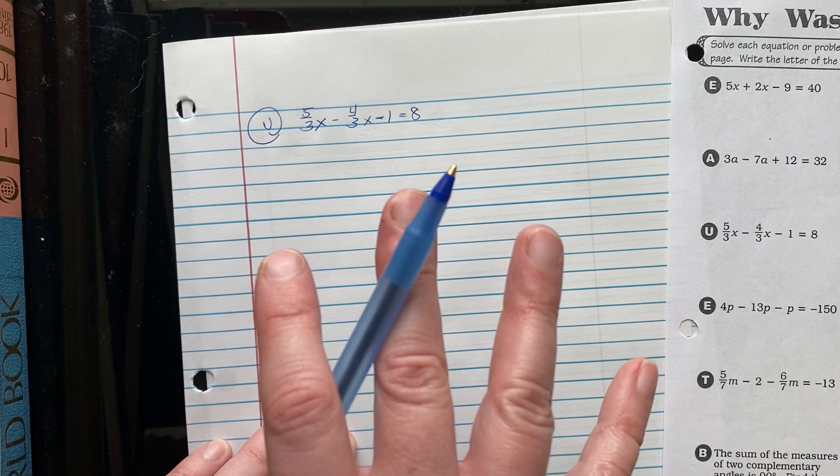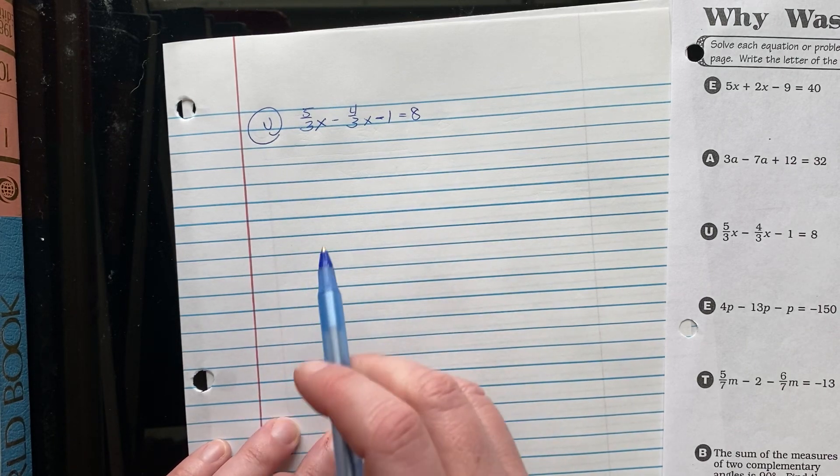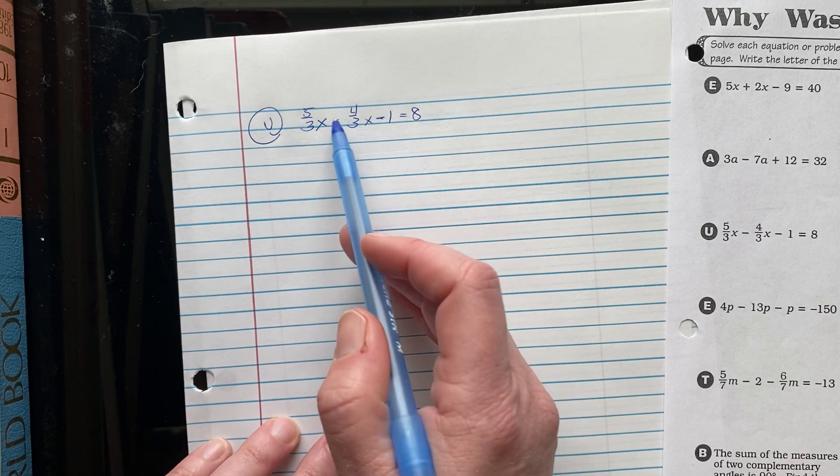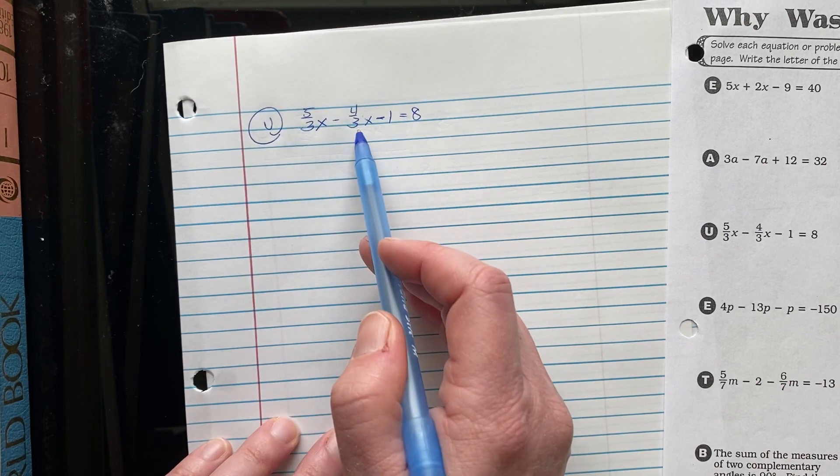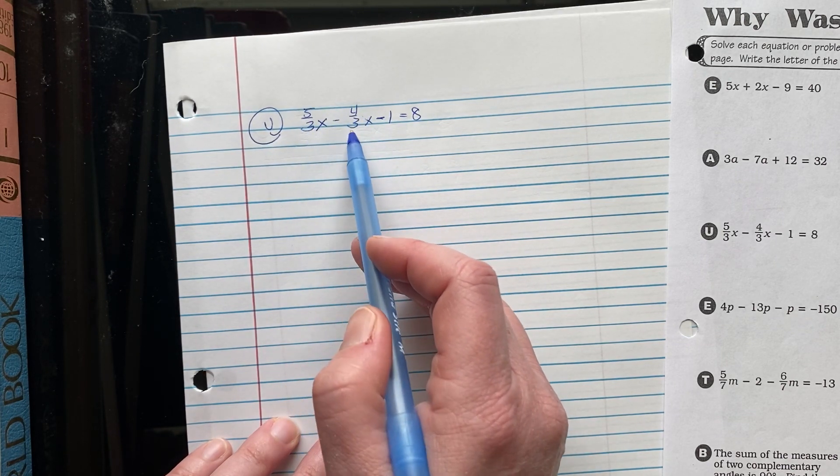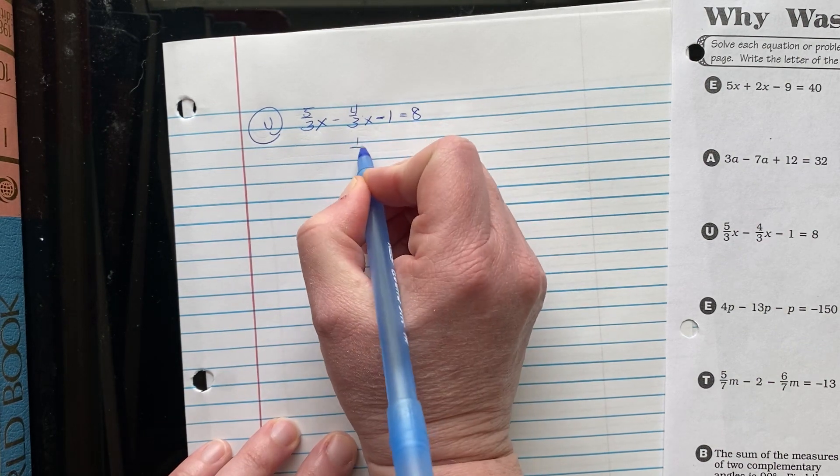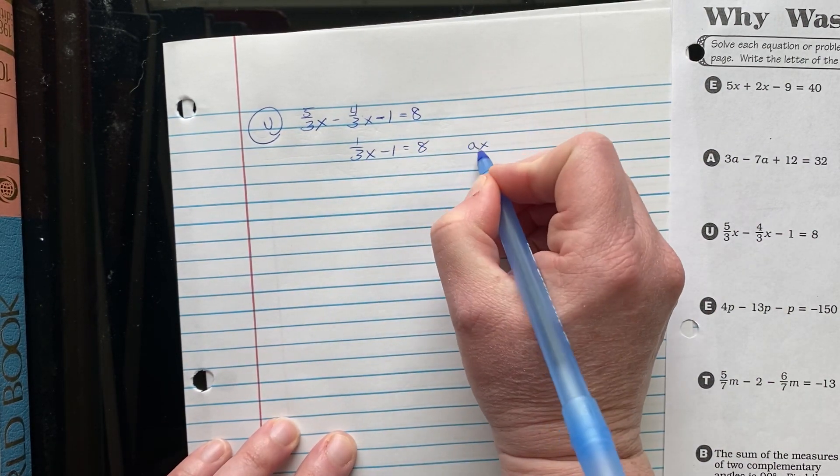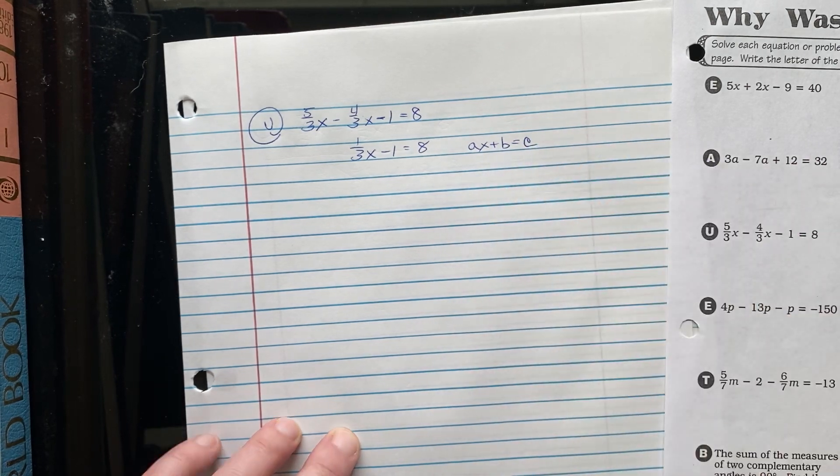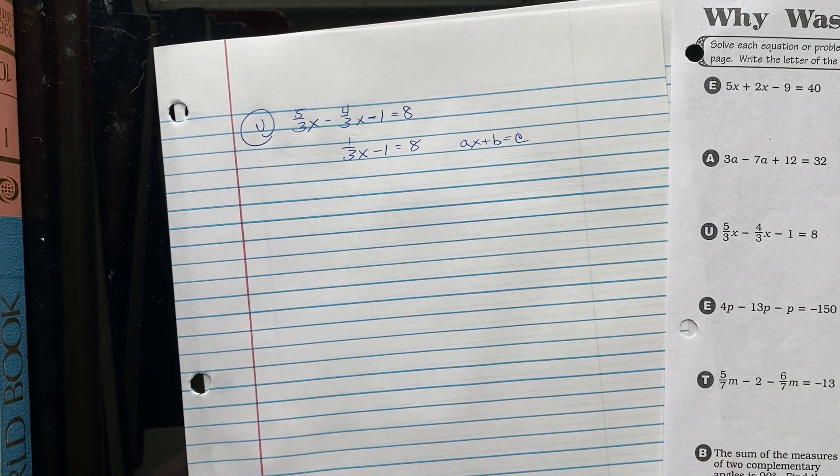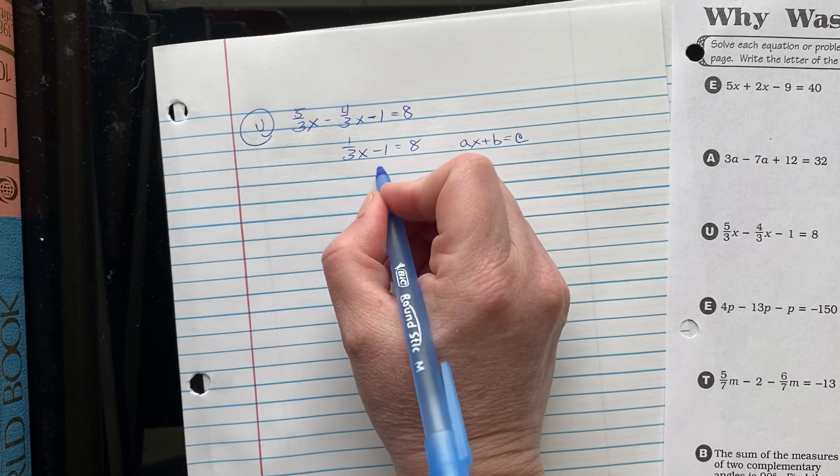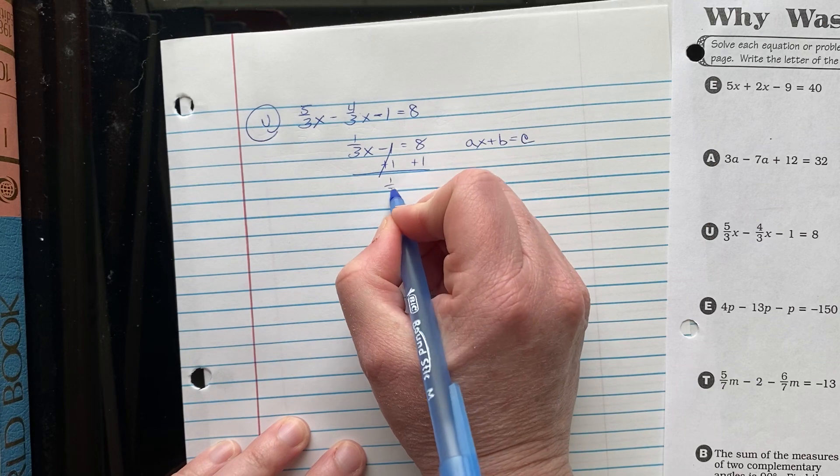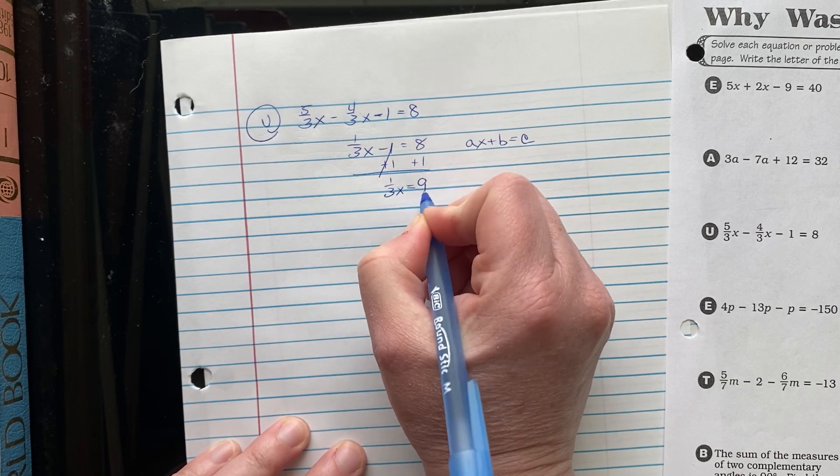When I look at this, I'm getting very excited here. We just saw some notes about combining like terms. We have two variable terms here that we can combine. Five thirds minus four thirds of the x's. So we get one third x minus one equals eight. That's that beautiful ax plus b equals c format. We know we want to add and subtract across the equal sign here. So we're going to add one. It's that inverse operation giving us zero. One third x equals nine.